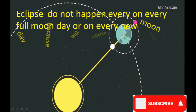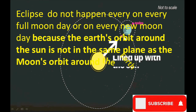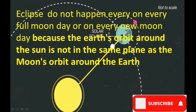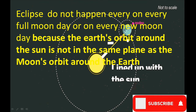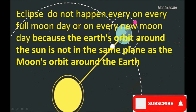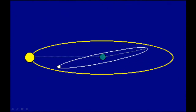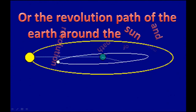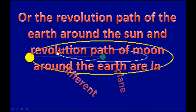Eclipses do not happen on every full moon day or on every new moon day because the earth's orbit around the sun is not in the same plane as the moon's orbit around the earth. The revolution path of the earth around the sun and the revolution path of the moon around the earth are in different planes.